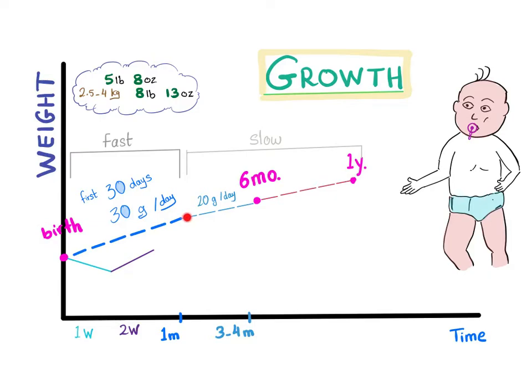After that, the rate will slightly decline. Instead of 30 grams per day, it will become 20 grams per day. That's during the 3rd to 4th months. So, here is fast and here is slower.